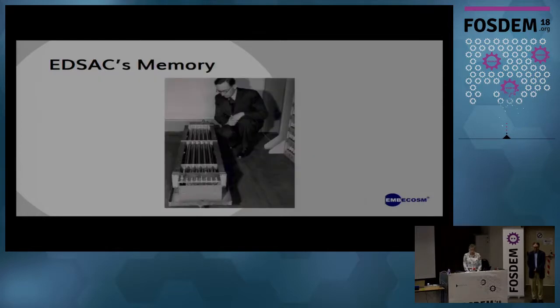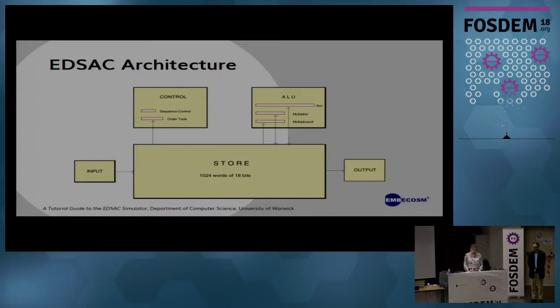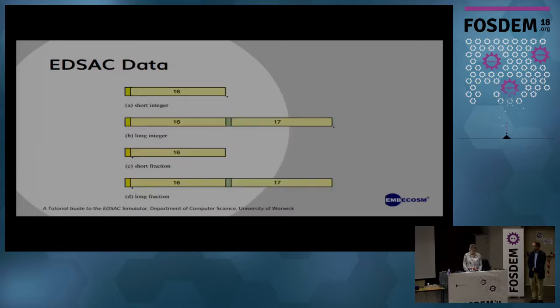EDSAC used mercury delay lines for memory and vacuum tubes for logic. Despite 3,000 vacuum tubes and five-foot-long delay lines, EDSAC could just about fit into a five-meter by four-meter room. It consisted of a control unit, an ALU holding a 71-bit accumulator and two 35-bit multiplication operands, and a general store initially holding 512 18-bit words, later increased to 1024 words. Short words on EDSAC were 17 bits long, long words were 35 bits, and the accumulator could hold 71 bits including the sign.